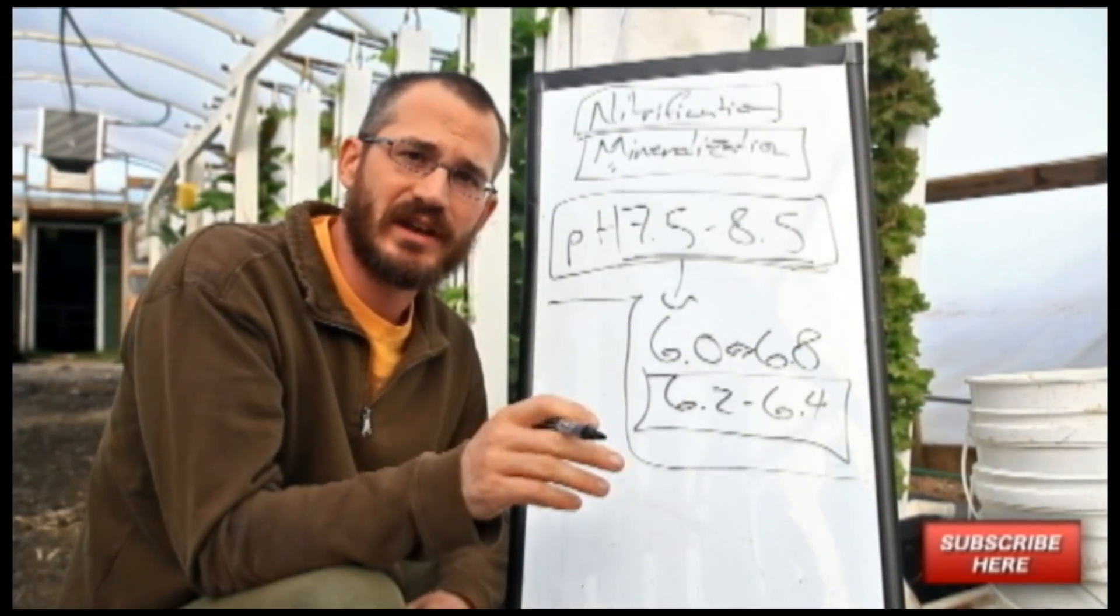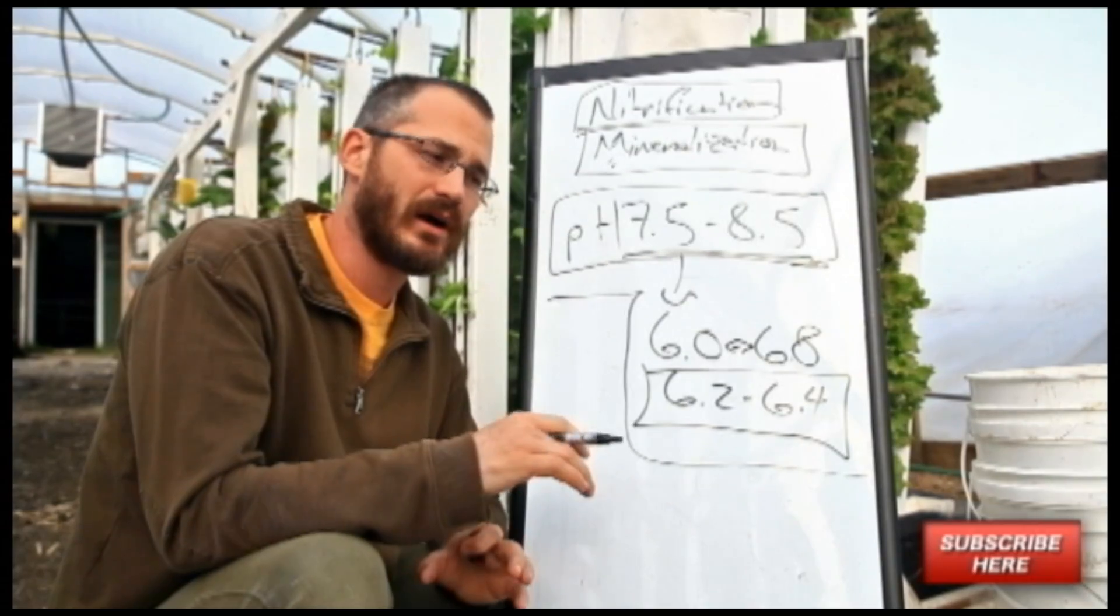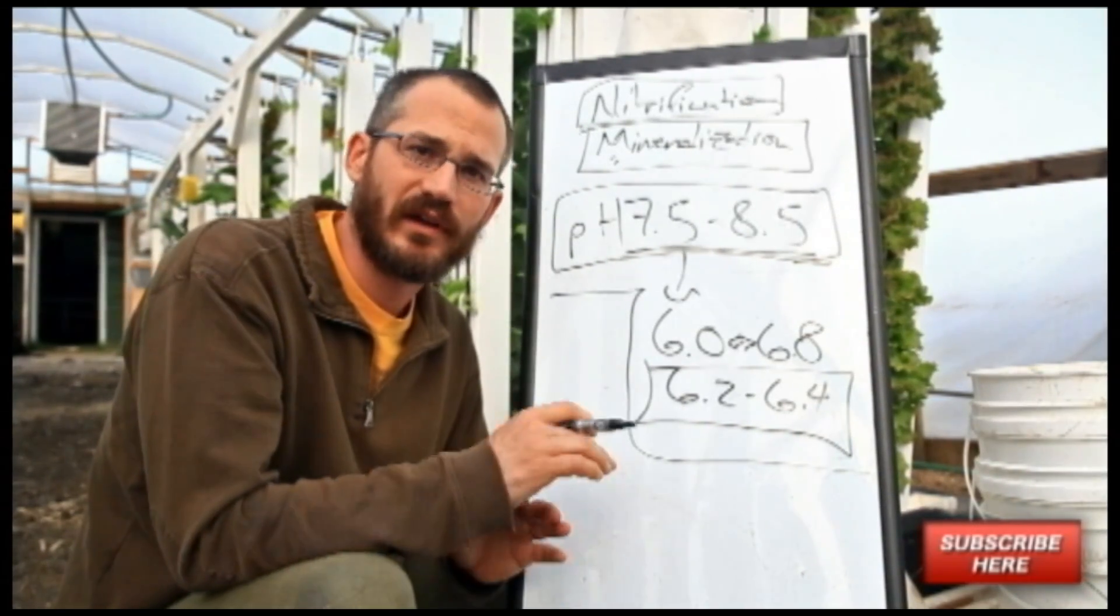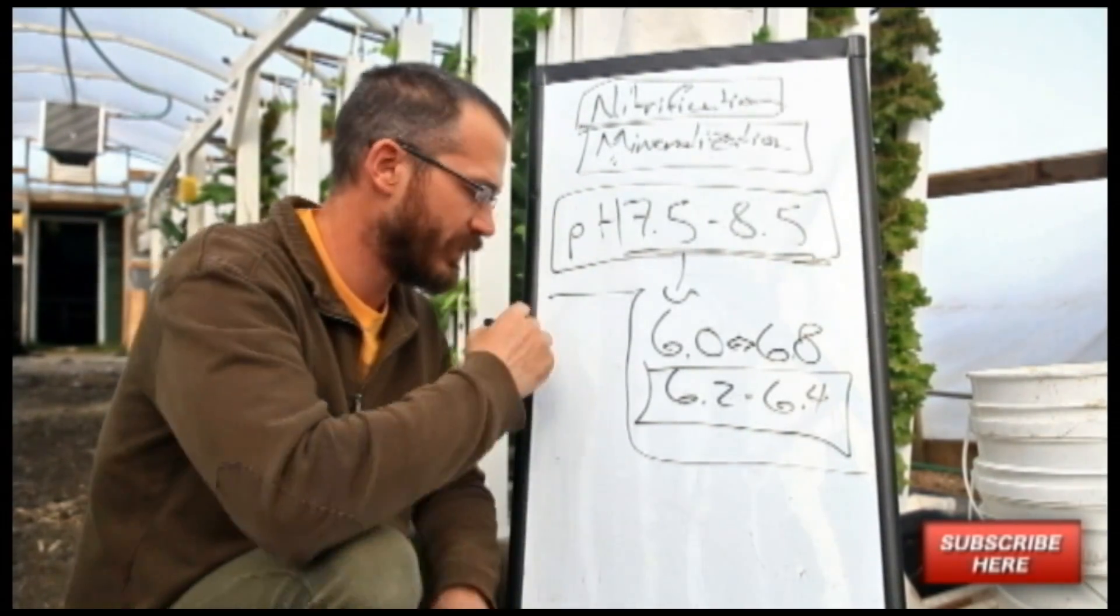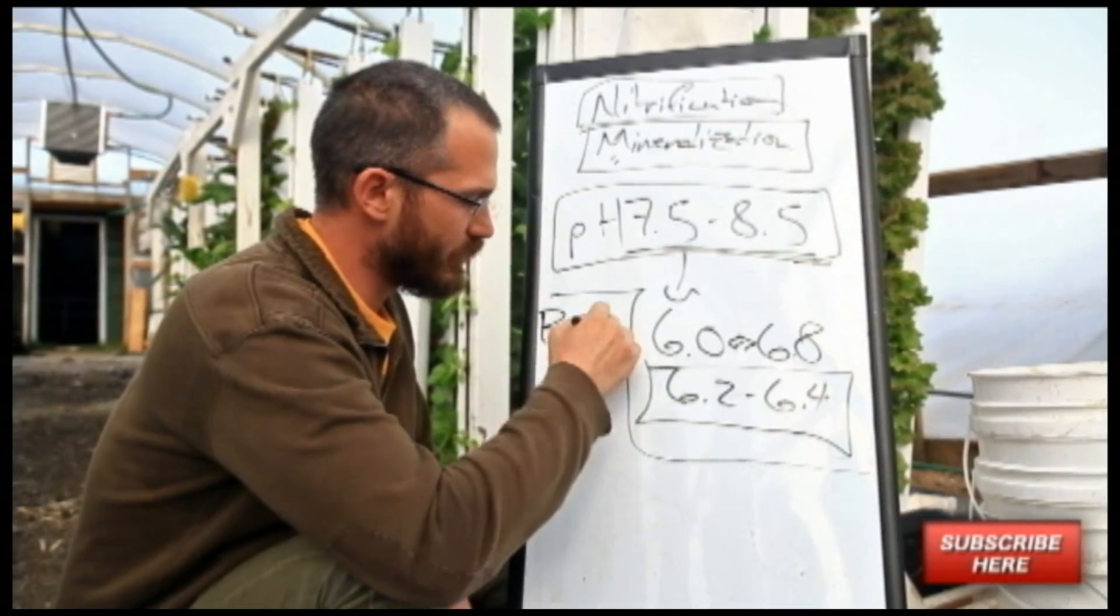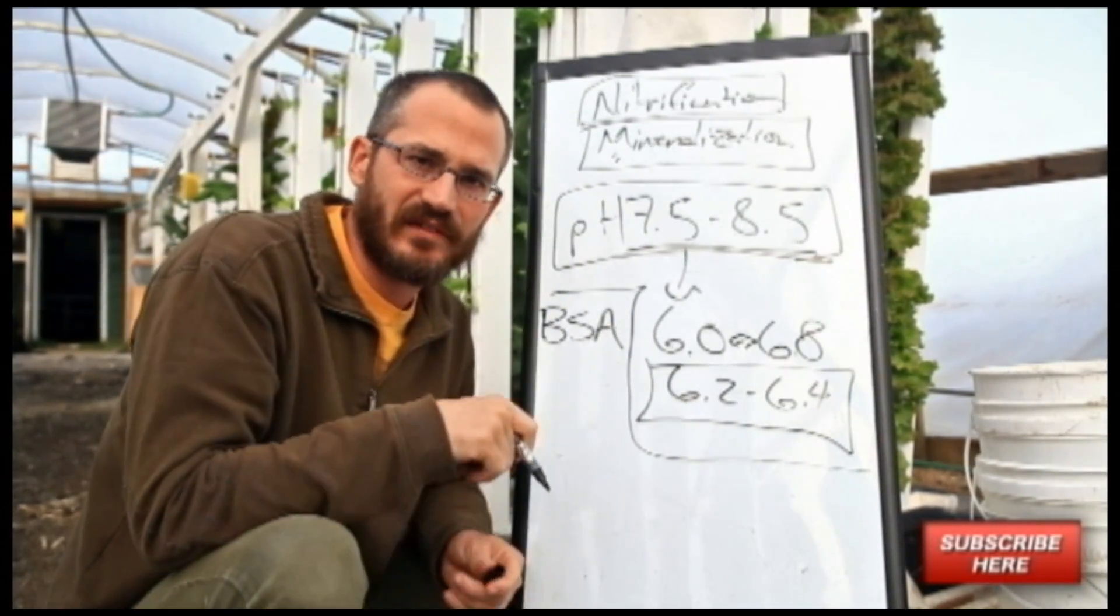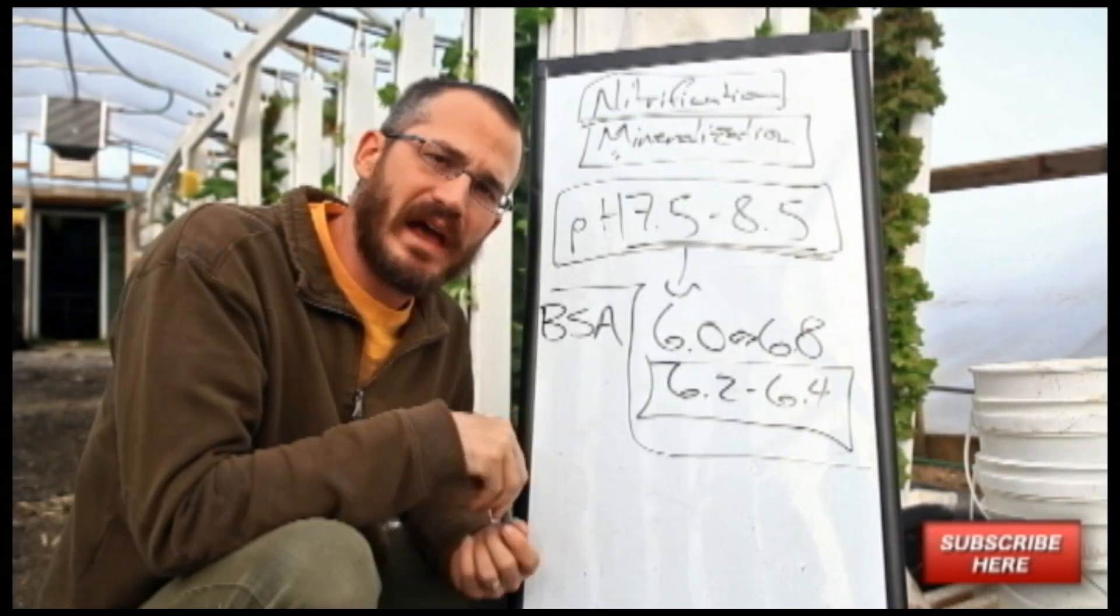So the last thing that needs to be said is that nitrification happens on biological surface area. So these are the surface areas of your system, and this is called BSA.